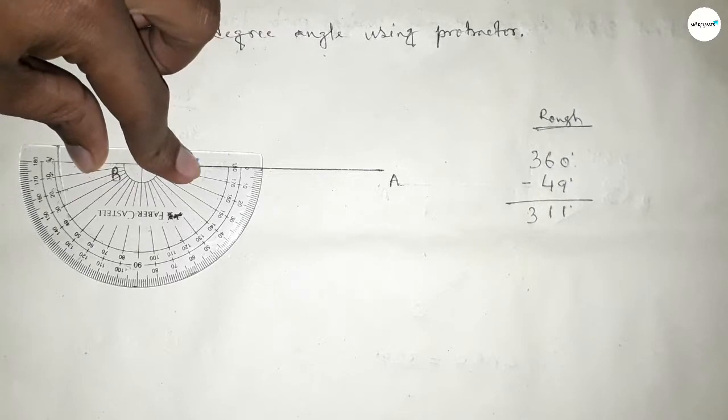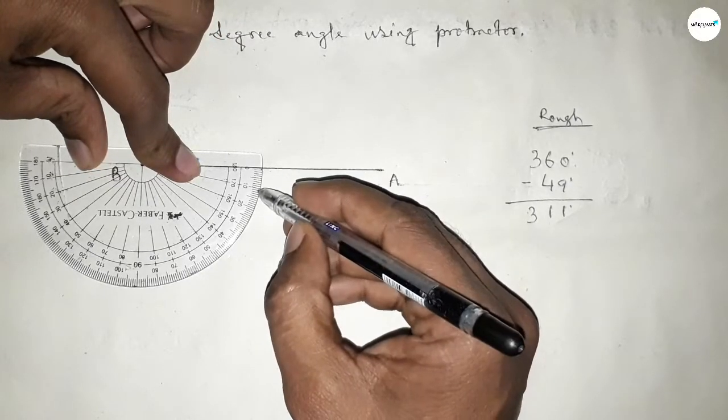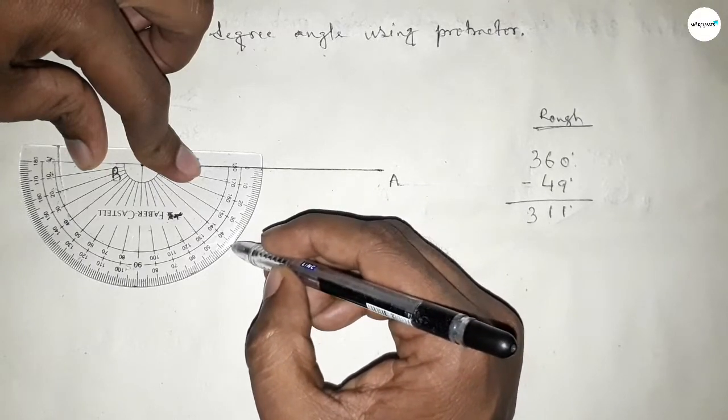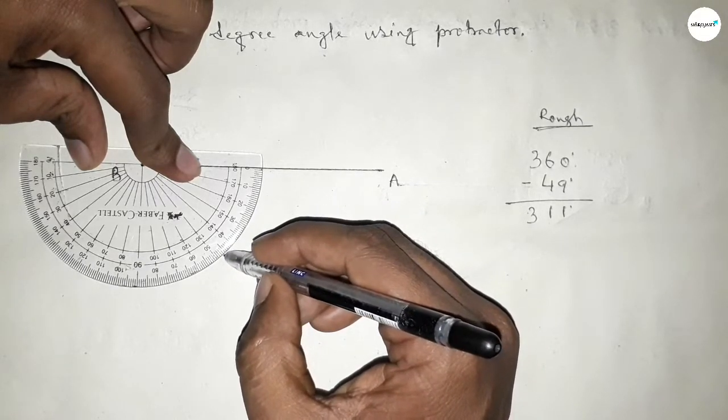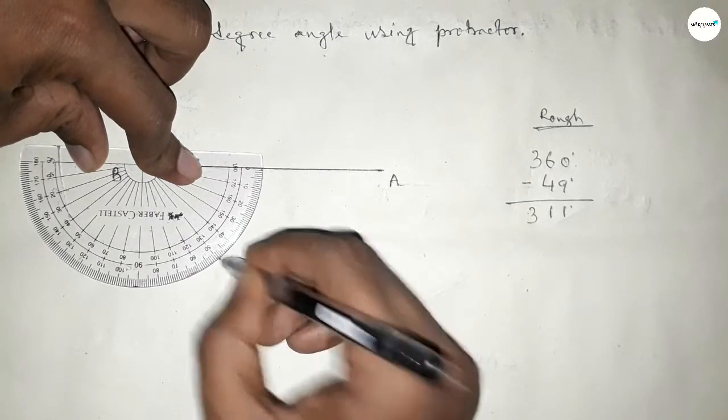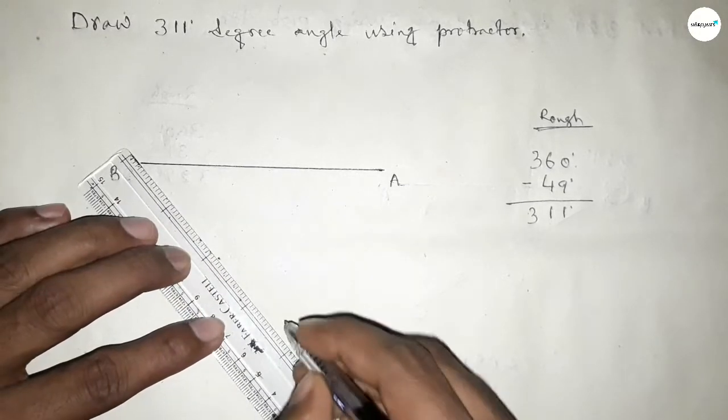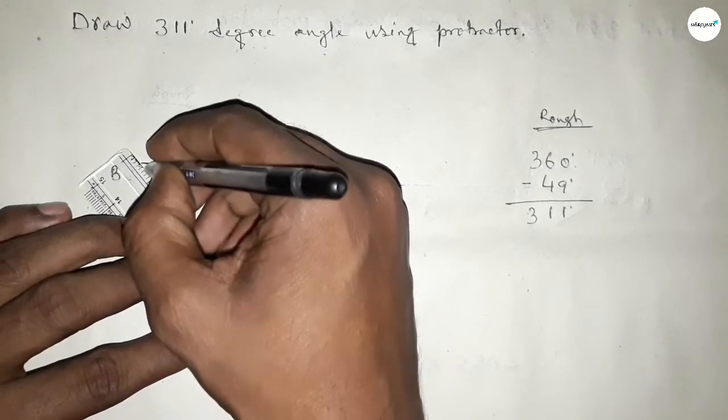So now counting 49 degree angle. So this is 10, 20, 30, 40, 45, 46, 47, 48, 49. So this is 49 degree. So if you subtract 49 degree angle from 360, then we can get 311 degree.